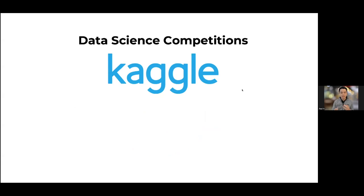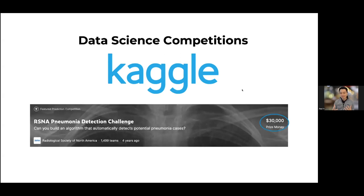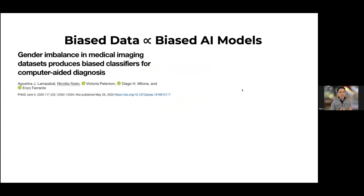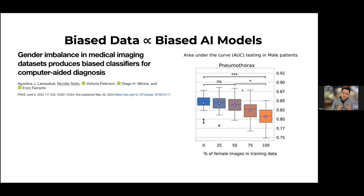Data science competitions like Kaggle are popular sources for data used to develop AI models in radiology, offering huge cash prizes. But when we examine these Kaggle competition data sets, the majority do not report demographics at all, and when they do, it's usually age or sex — seldom race. The implication: even if we have world-class models being developed, if we're not reporting demographics, we won't be able to identify whether an algorithm is biased. This was highlighted by landmark work in PNAS showing that increasing imbalances in male or female representation in training data leads to different model performance.